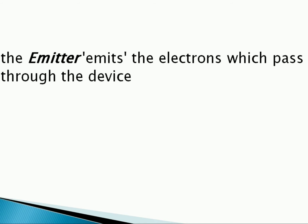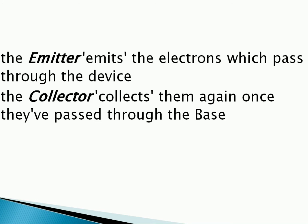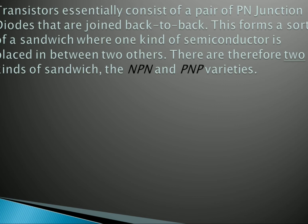The emitter emits the electrons which pass through the device. The collector collects them again once they have passed through the base. Transistors essentially consist of a pair of PN junction diodes joined back to back. This forms a sort of sandwich where one kind of semiconductor is placed in between two others.